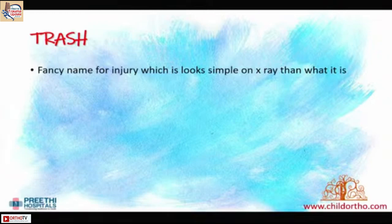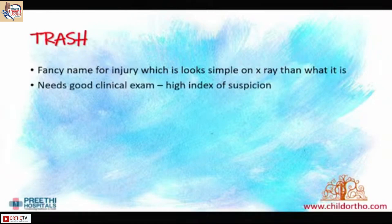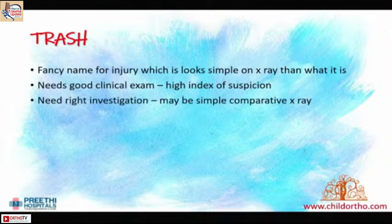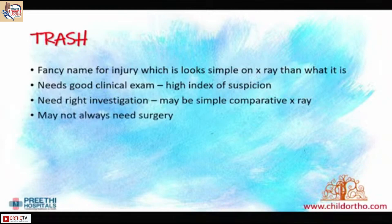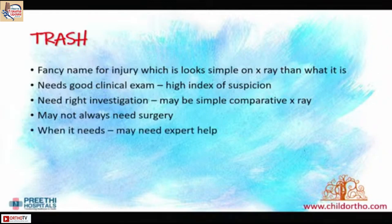Basically, TRASH is a fancy name given to an injury that looks simpler on x-ray than it actually is. You need a thorough clinical exam as already emphasized in the previous lecture, and a high index of suspicion. The right investigation can be as simple as an opposite elbow x-ray — you don't always need MRI or ultrasound. Several of these injuries may not need surgery and can be treated conservatively. What it sometimes needs is expertise, particularly for rare injuries like posterior subluxation with a radial head fracture. That is what you need to learn about TRASH lesions. Thank you very much.